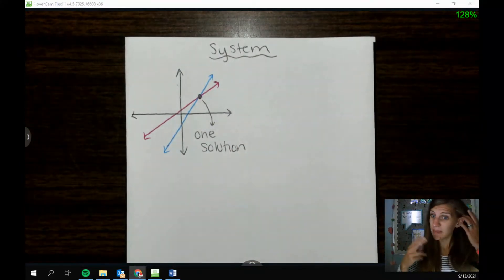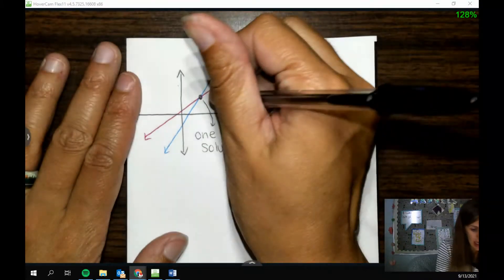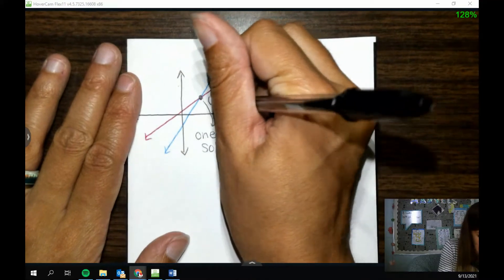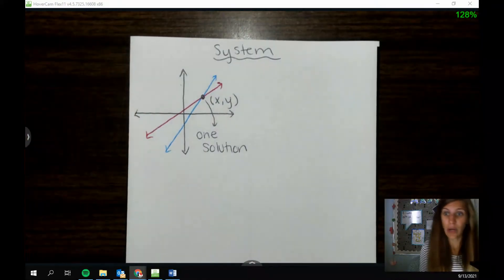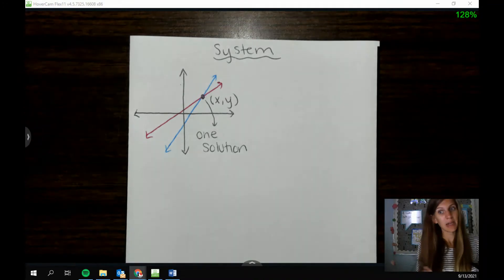However, like I said, we're going to be solving for two variables, and the reason that it's two is because this spot really has two numbers, the x number and the y number.